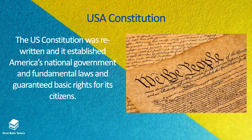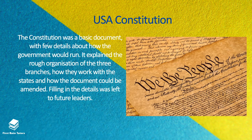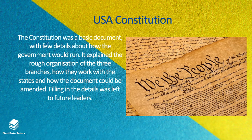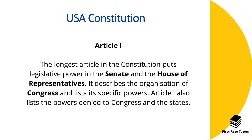This led to the USA Constitution as we know it today. This constitution was essentially rewritten and it established America's national government and its fundamental laws, as well as guaranteeing basic rights for its citizens. It is a fairly basic document with few details about how the government is going to run. It outlines the rough organization of the three branches, how they work with the states, and how the document could be amended — filling in the details was left to future leaders.